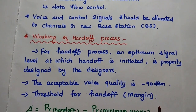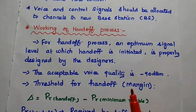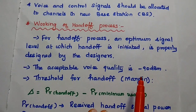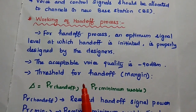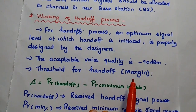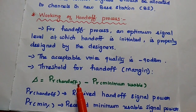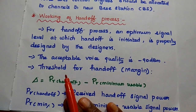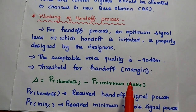For initiating the handoff process, an optimum signal level is designed by the designer. Based on this optimum signal level, the call is handed over to the new cell. Generally, the acceptable voice quality is -90 dBm or -100 dBm. A threshold for handoff — the marginal value (del) — is defined as the received handoff power minus the minimum usable received power. Based on this del value, we can ensure the handoff process from one cell to another.